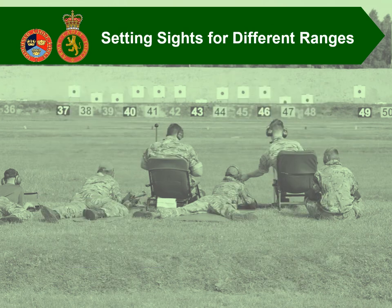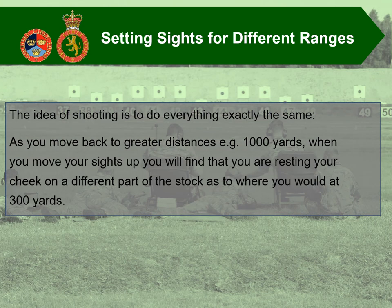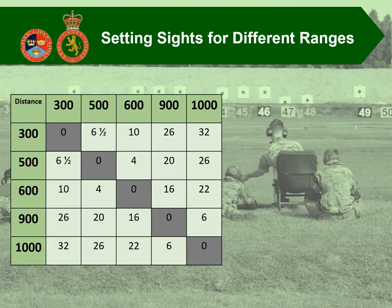Moving on to look at setting the sights for the various ranges. The idea of shooting is to do everything exactly the same, but as you move back to greater distances such as 1000 yards, you'll find that you're resting the cheek in a different part of the stock compared to shooting at 300 yards. The typical chart for elevation rises between distances: from 300 to 500 yards there's a 6.5 minute rise; from 300 to 600 there's 10 minutes; from 300 to 900 there's 26 minutes; and from 300 to 1000 yards there's 32 minutes of elevation.